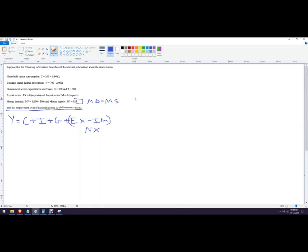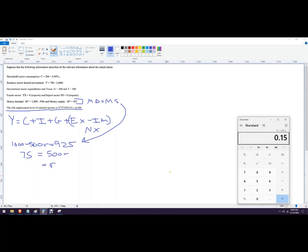MS is 925. So MD is 1000 minus 500R equals 925. We're just solving for R. We're going to add 500R to both sides. This would be 500R. And then we're going to subtract 925 from both sides. This would be 75. R equals 75 over 500. So 75 divided by 500 is 0.15.